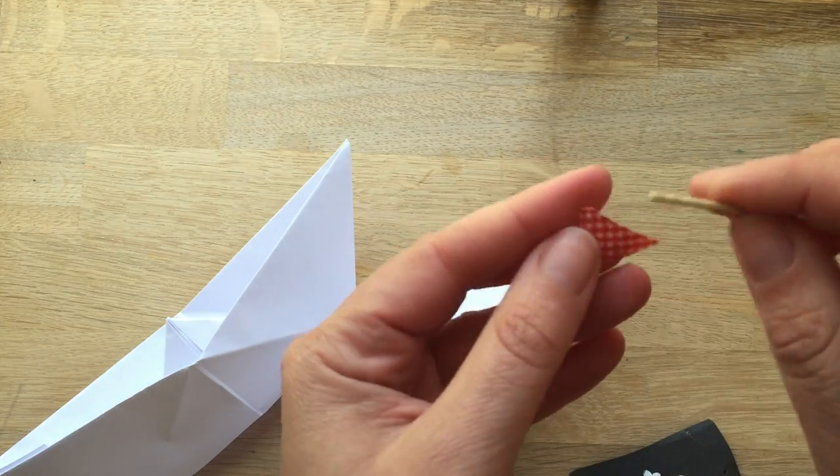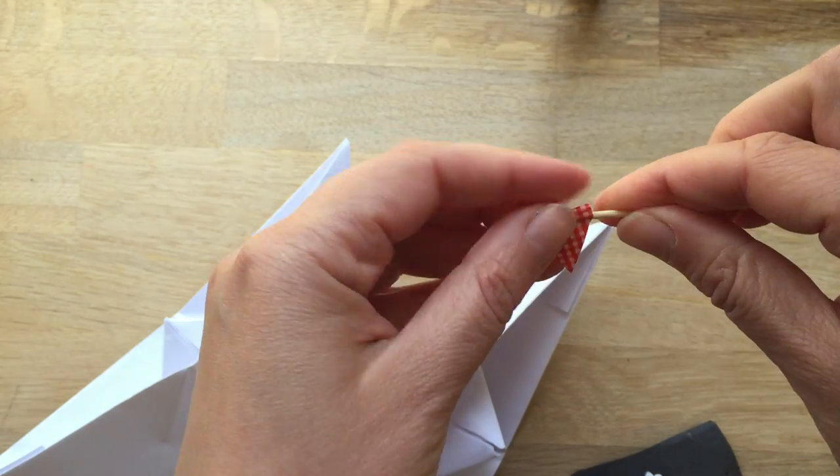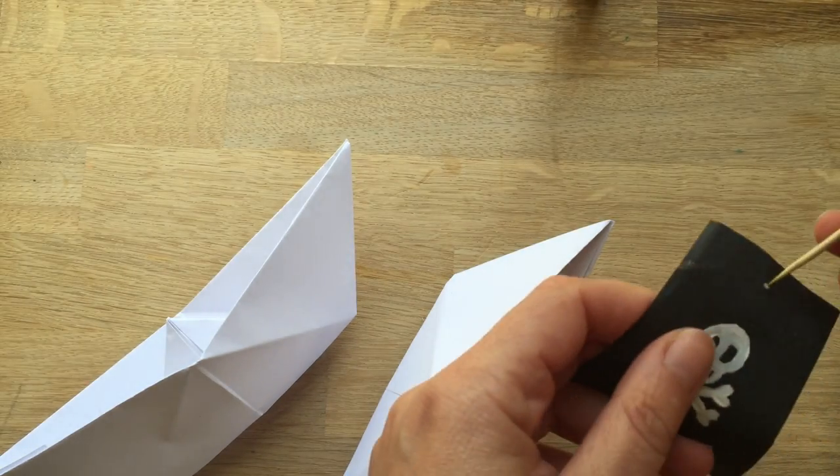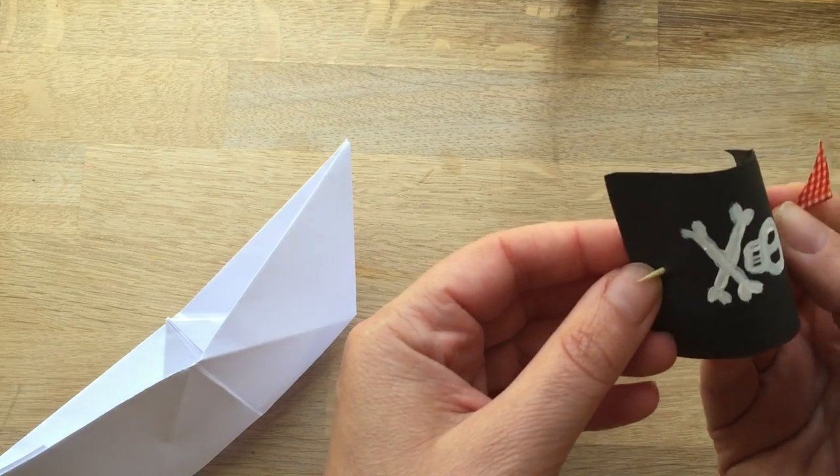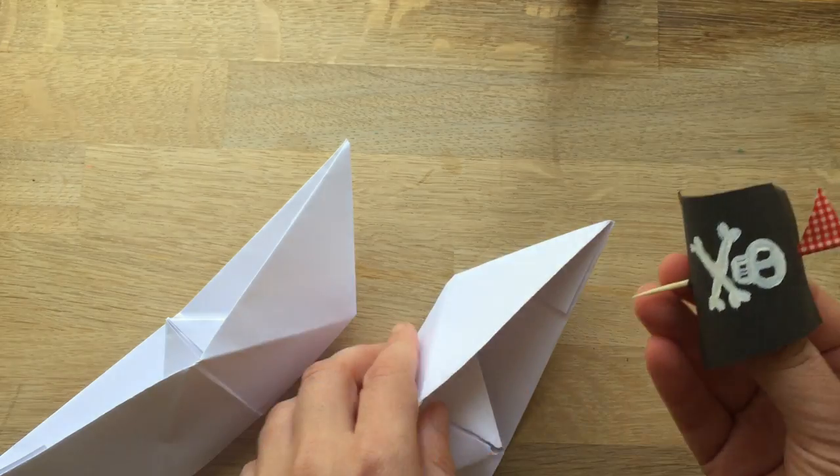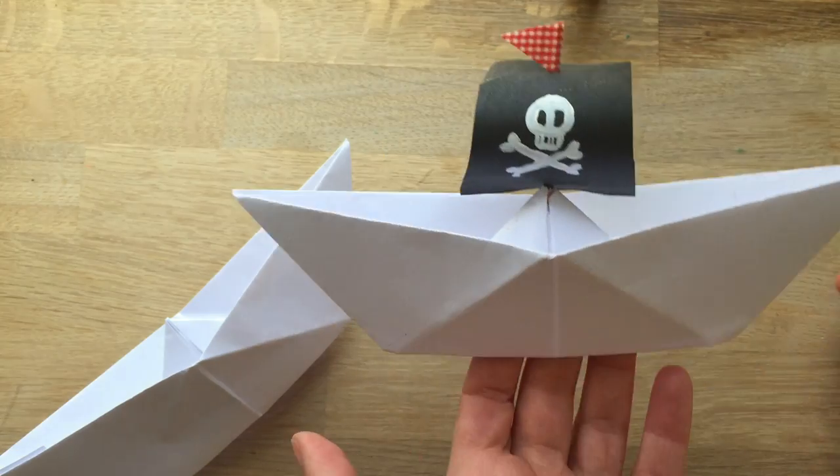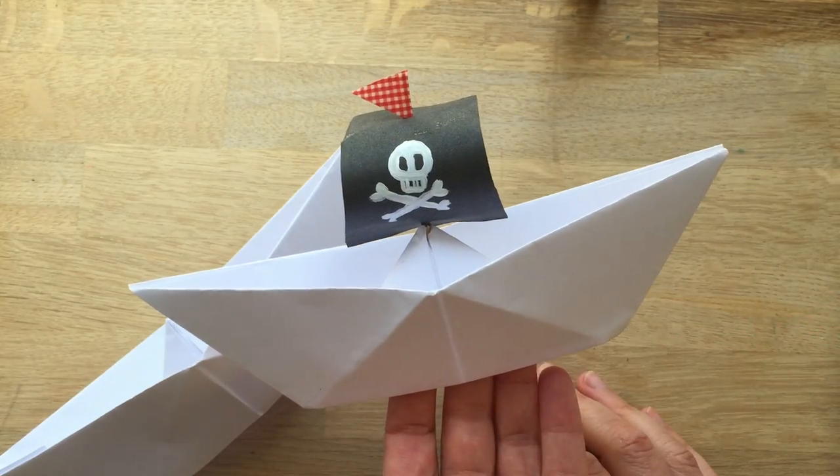This is just some washi tape cut into a triangle. That's better, isn't it? I made a little hole in here previously and then you've got a little pirate boat. Wonderful!